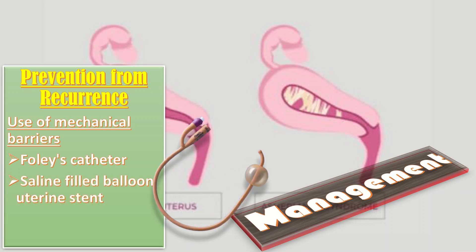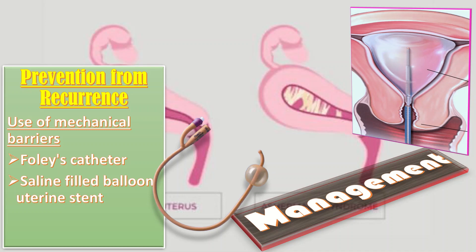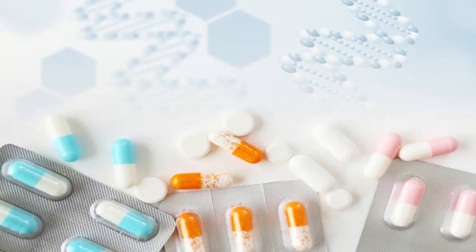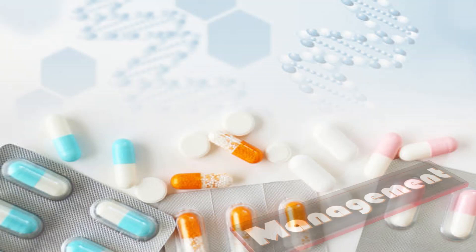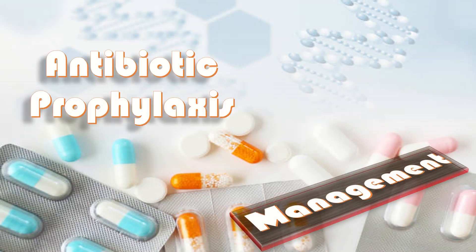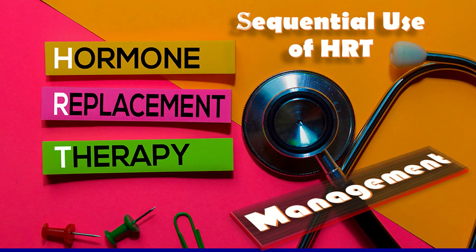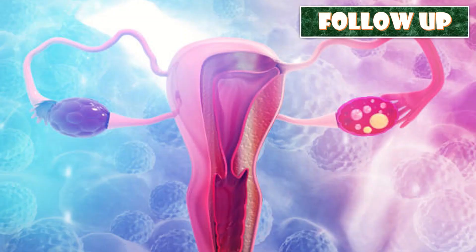Mechanical barriers include: first, a Foley's catheter; secondly, a saline-filled balloon intrauterine stent; and thirdly, gel barriers like hyaluronic acid barrier. The aim of all these is to maintain the opposing walls apart during healing. A third line of management is antibiotic prophylaxis, followed by sequential hormone replacement therapy, which stimulates endometrial growth and prevents opposing walls from fusing together.